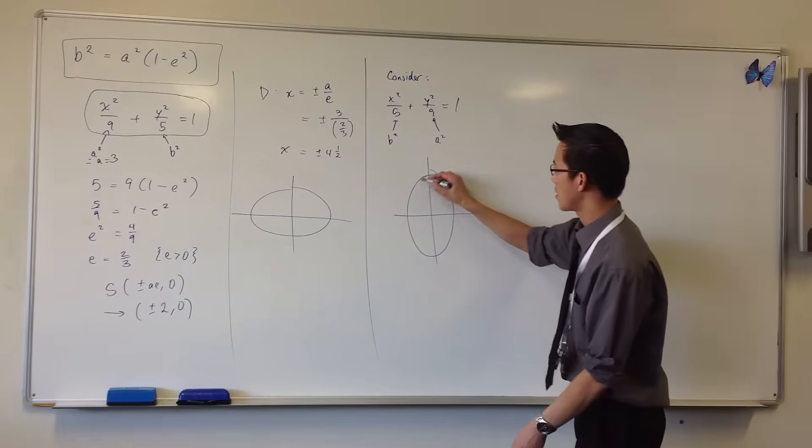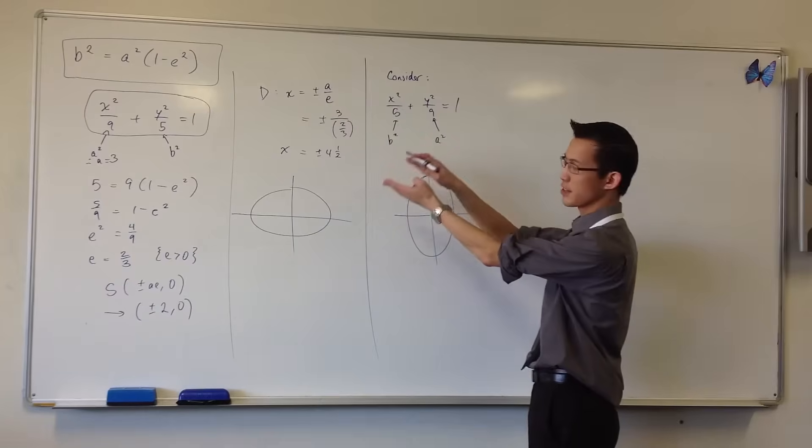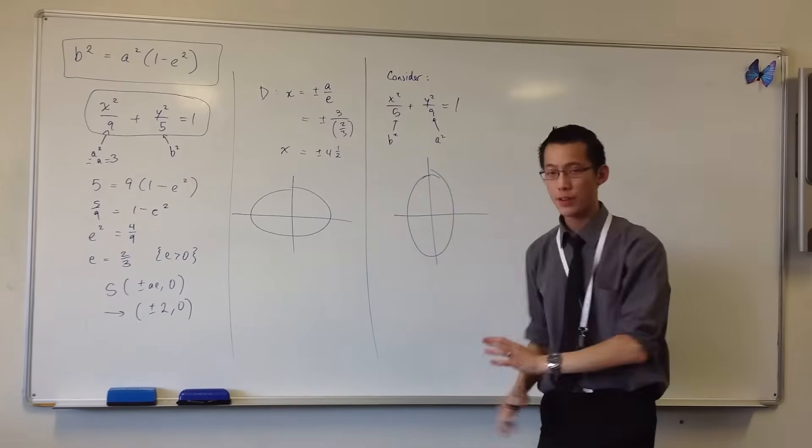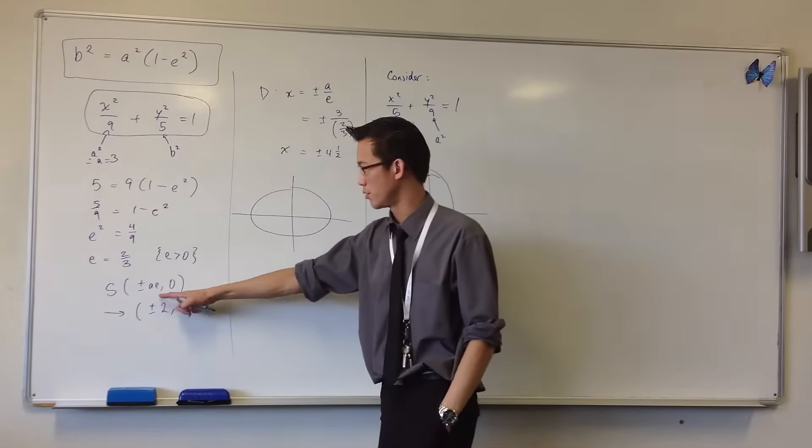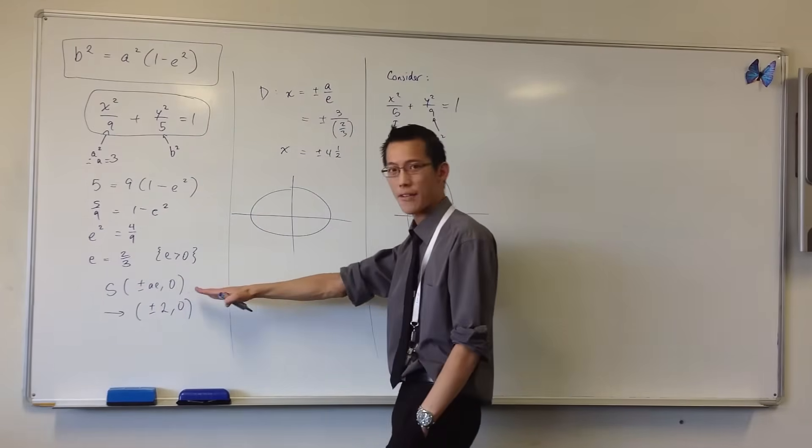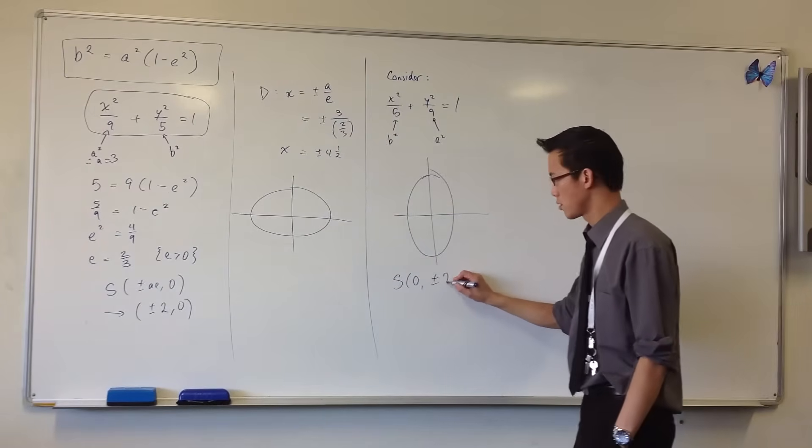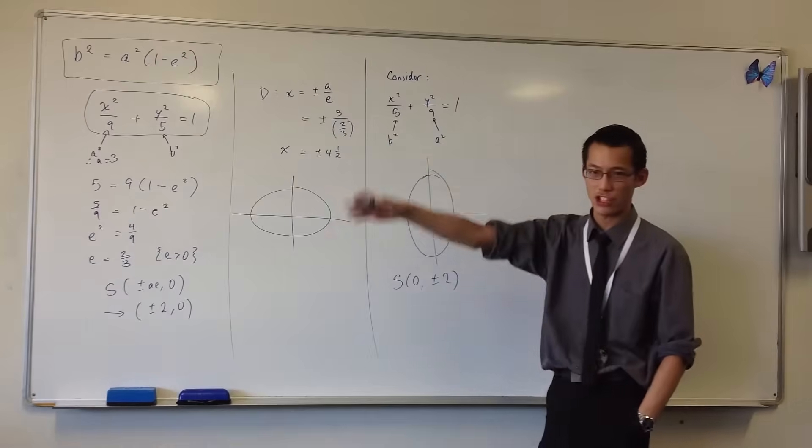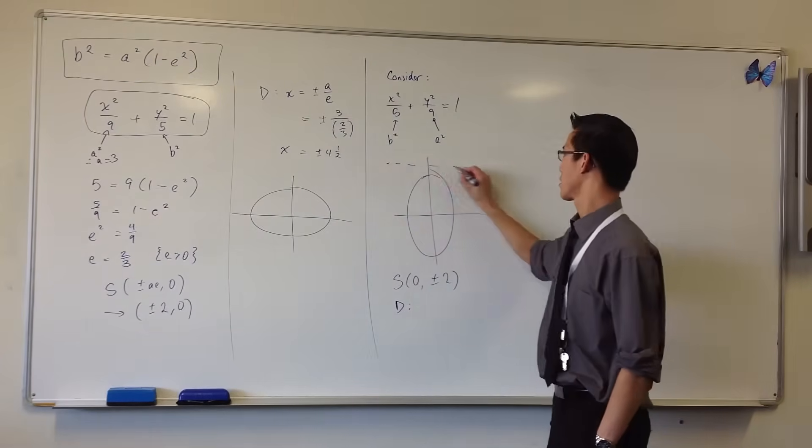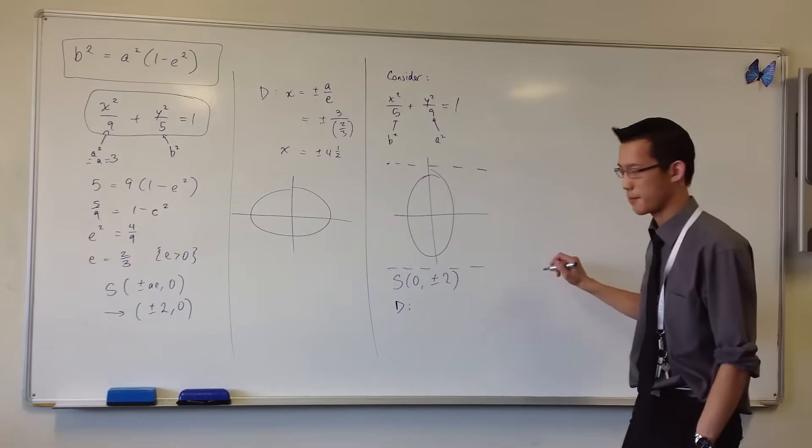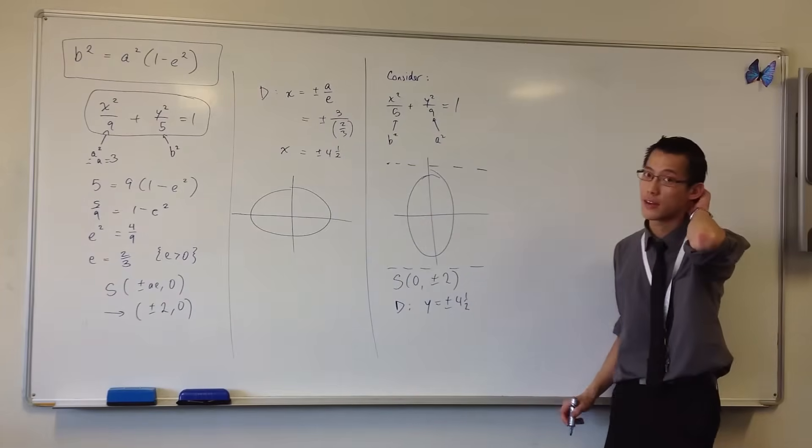Now since therefore we're thinking about the semi-major axis and semi-minor axis being swapped around, everything else is also swapped around. So the foci are no longer on the x values being both sides, they're on the y values. So you're going to have the foci being at zero plus or minus two in this case. In the same way, the directrices are going to be these horizontal lines which gives you y equals plus or minus four and a half, the same values, it's just y instead of x.